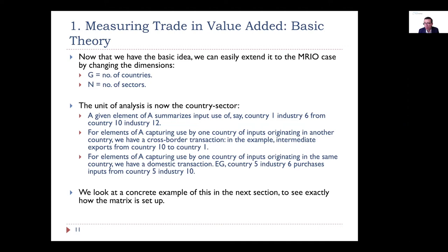Since we're using matrices, we can easily change dimensions — G is the number of countries, N is the number of sectors. The unit of analysis becomes the country-sector pair. A given element of A summarises input use in a particular country-sector pair from another country-sector pair. We can split A into parts capturing use of inputs originating within a country and parts originating from cross-border transactions — intermediate exports from one country to another — already seeing how to split domestic and foreign input sourcing.